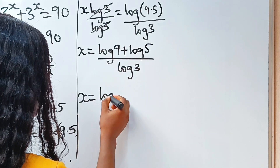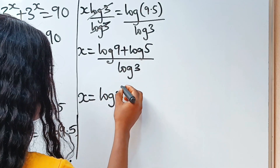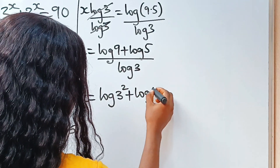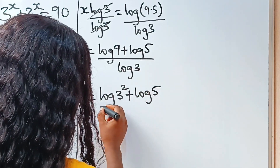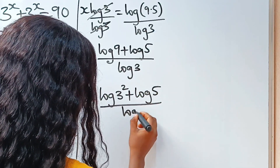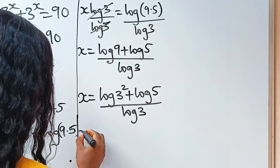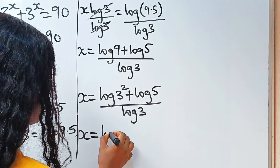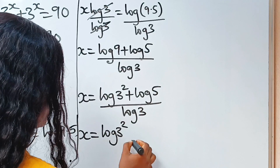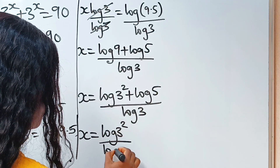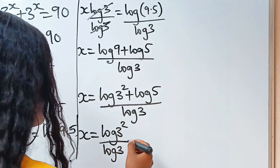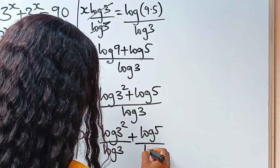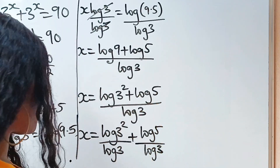We have that x is equal to log 9, which is the same as 3 squared, plus log 5 divided by log 3. So we have that x is equal to log 3 squared divided by log 3, plus log 5 divided by log 3.